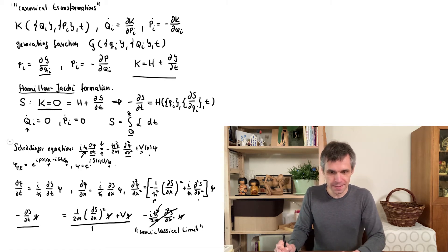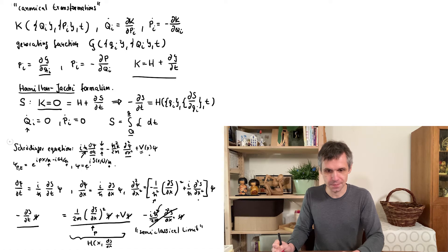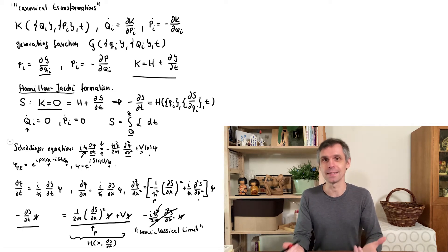And what we then see is that this function s here fulfills the Hamilton-Jacobi equation because in this formalism this derivative here is simply momentum and so we have expressed the Hamiltonian on this side as a function of positions and these derivatives here and this is indeed what the Hamilton-Jacobi formalism asks us to do.